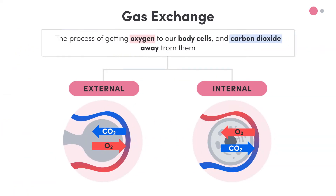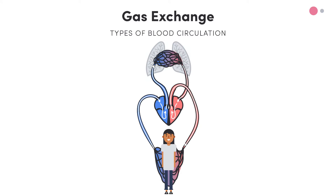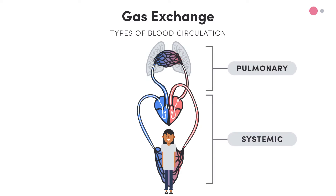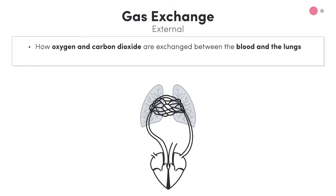Let's take a look at the two types of gas exchange. As I introduce them, I'm also going to throw in a quick reminder of our two types of circulation, which are closely related to the two types of gas exchange. If you're unsure what I mean by types of circulation, be sure to check out the lessons on the cardiovascular system. First, let's talk about external gas exchange, which is how oxygen and carbon dioxide are exchanged between the blood and the lungs.